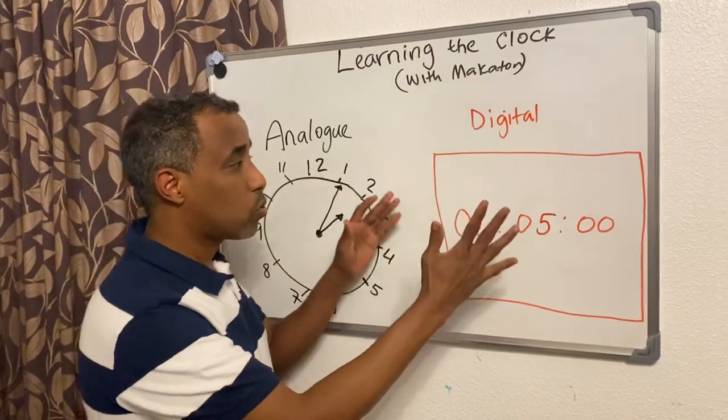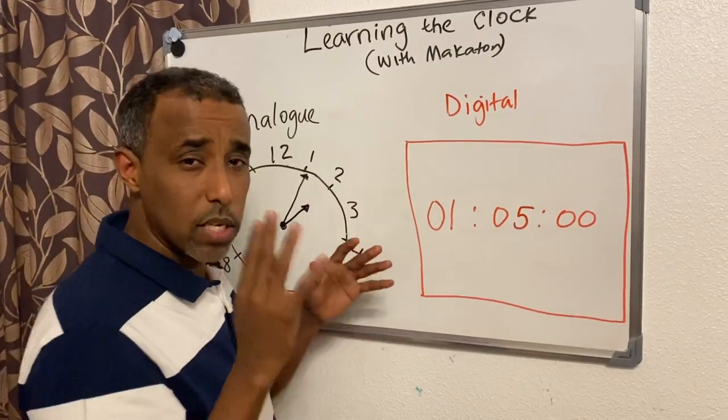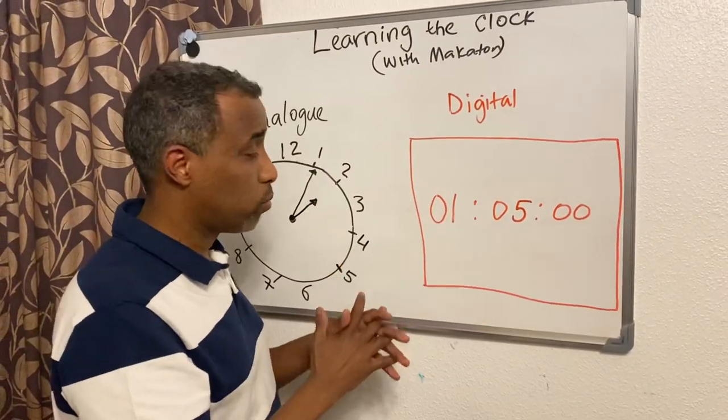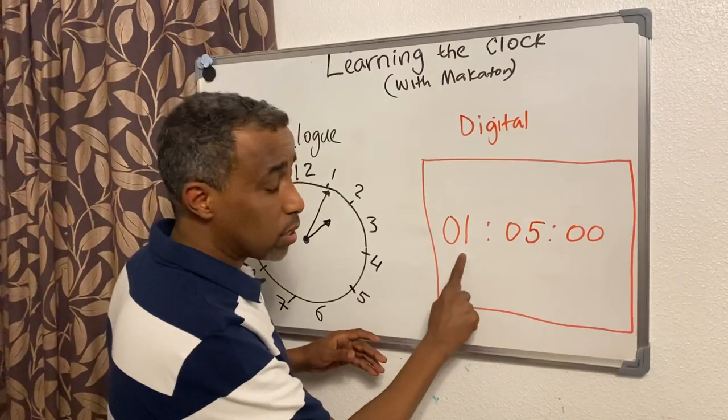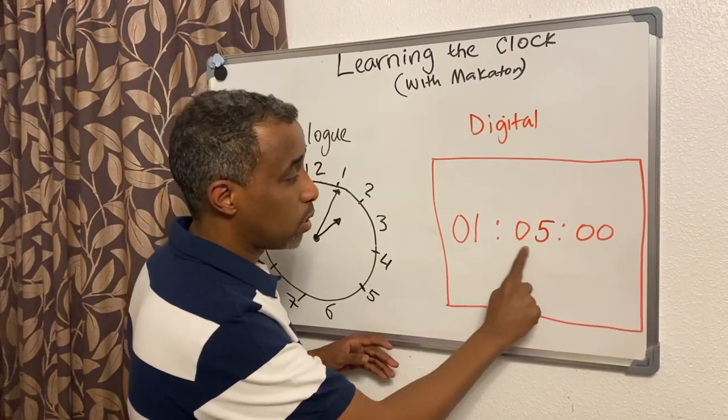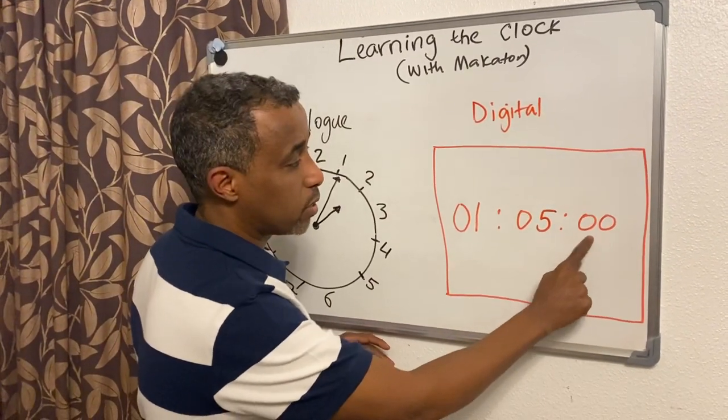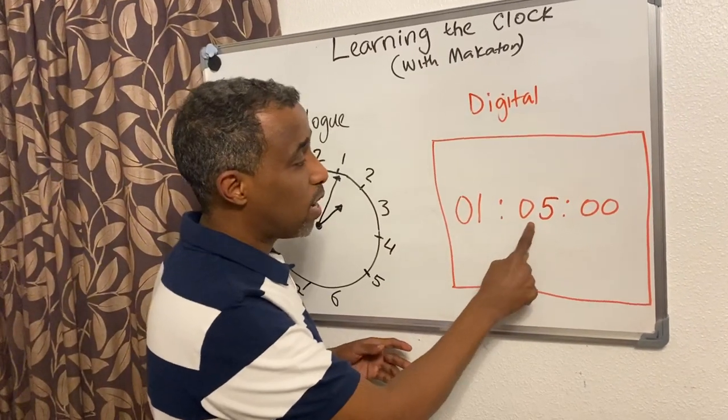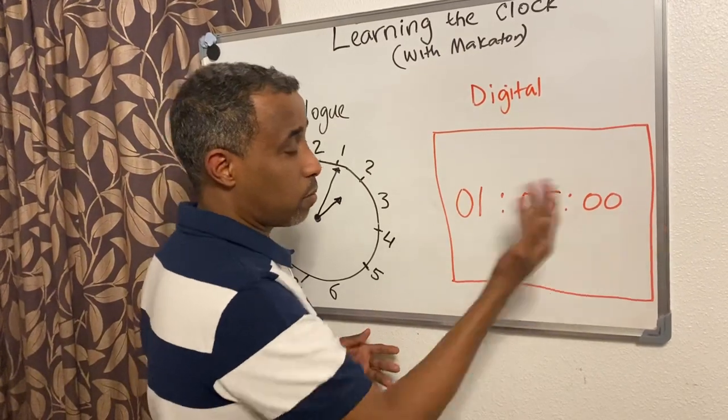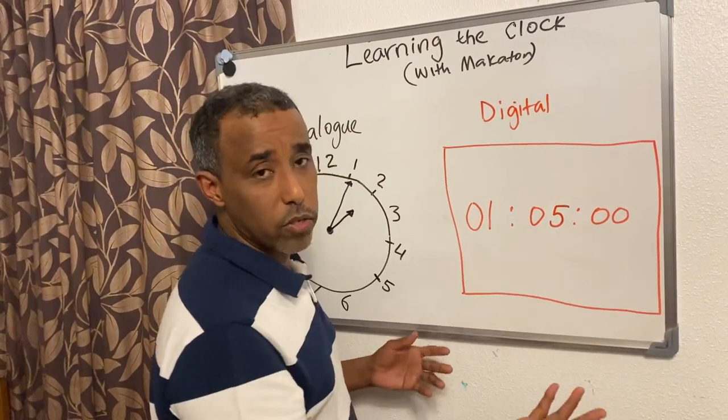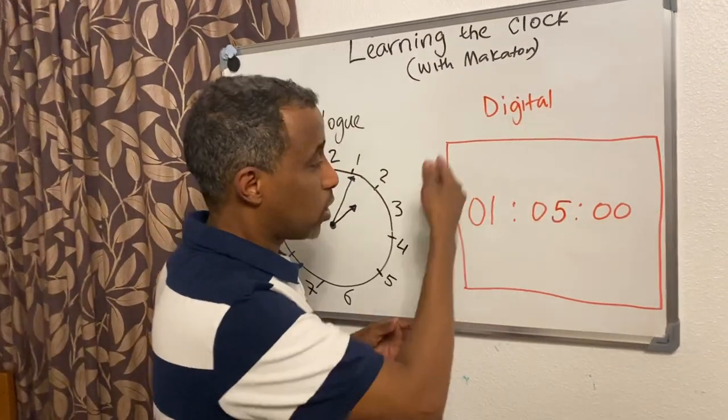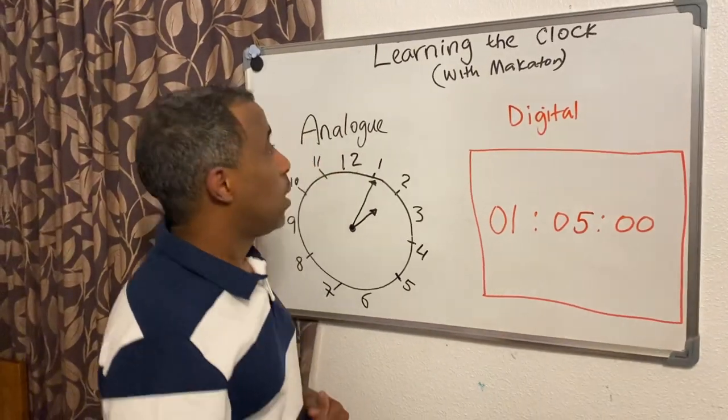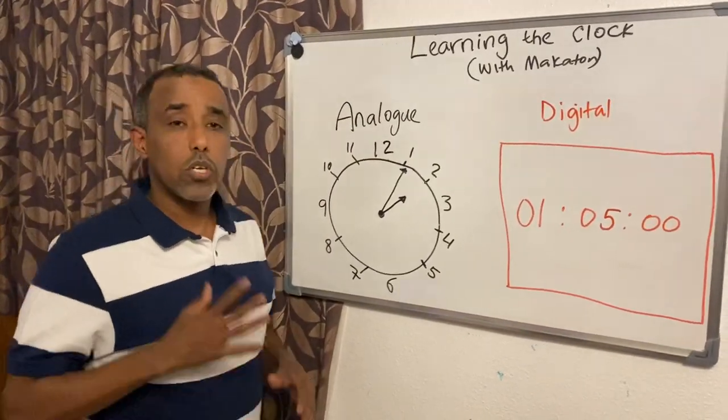When it comes to the digital clock, it's straightforward. This bit tells you the hour, and this bit is the minutes, and here is the seconds. Here it shows one, it's one o'clock and five minutes. It's one-oh-five. This is straightforward. Now we're going to sign with Makaton.